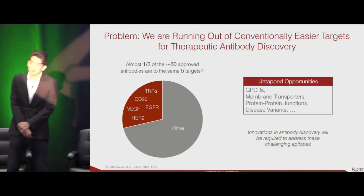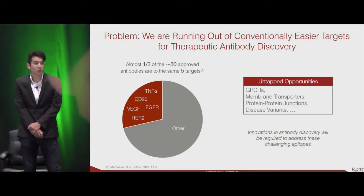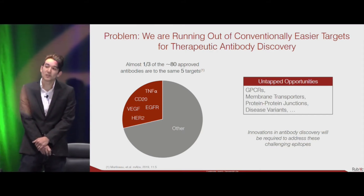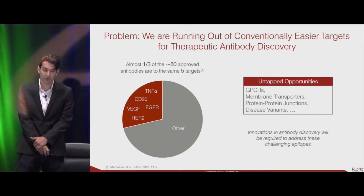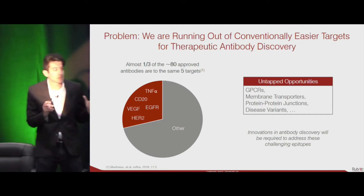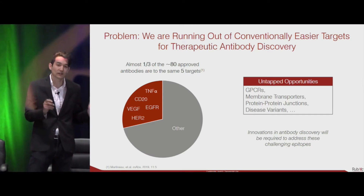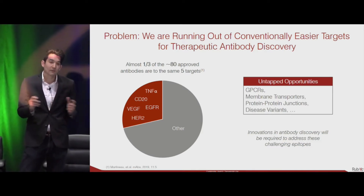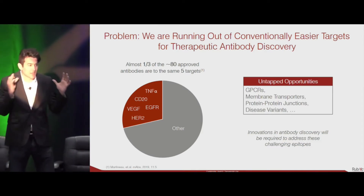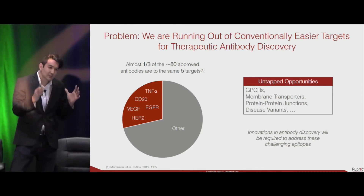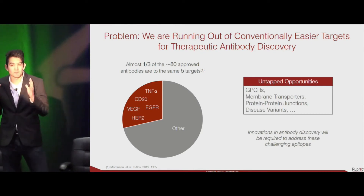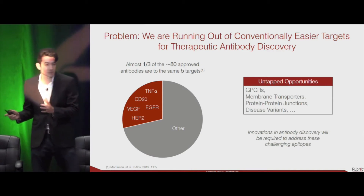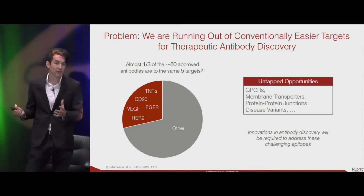One of the big problems in antibody discovery is that we're running out of the conventionally easier targets to go after. To illustrate this point, out of the roughly 80 approved antibodies, nearly one third of them are going after the same group of five targets. We've been narrowly focused on a small subset of the target space despite a vast number of untapped opportunities validated by small molecule therapeutics.